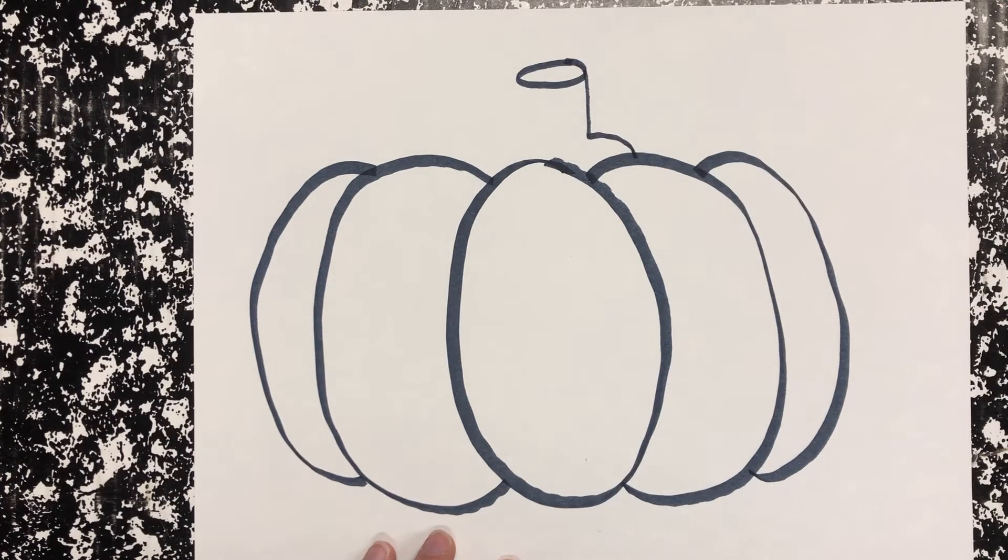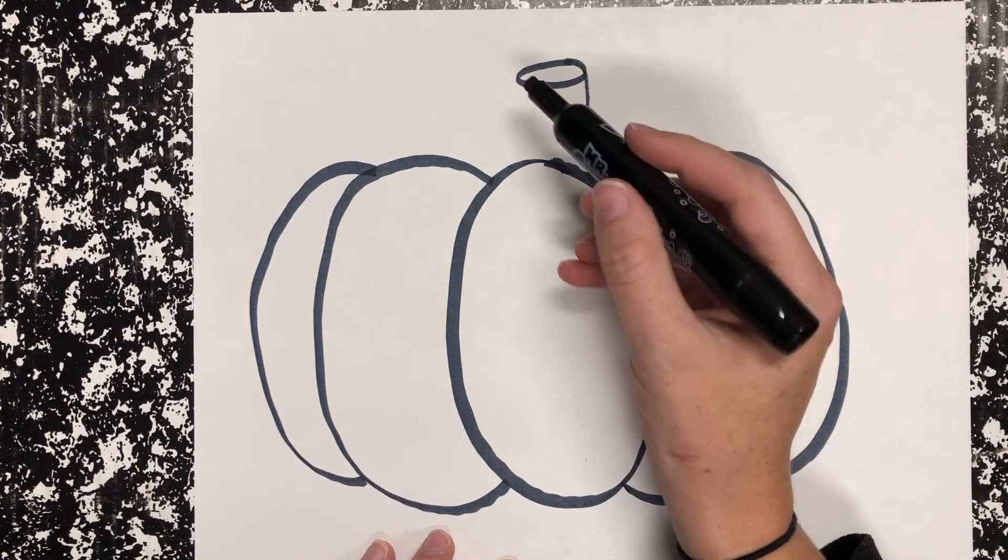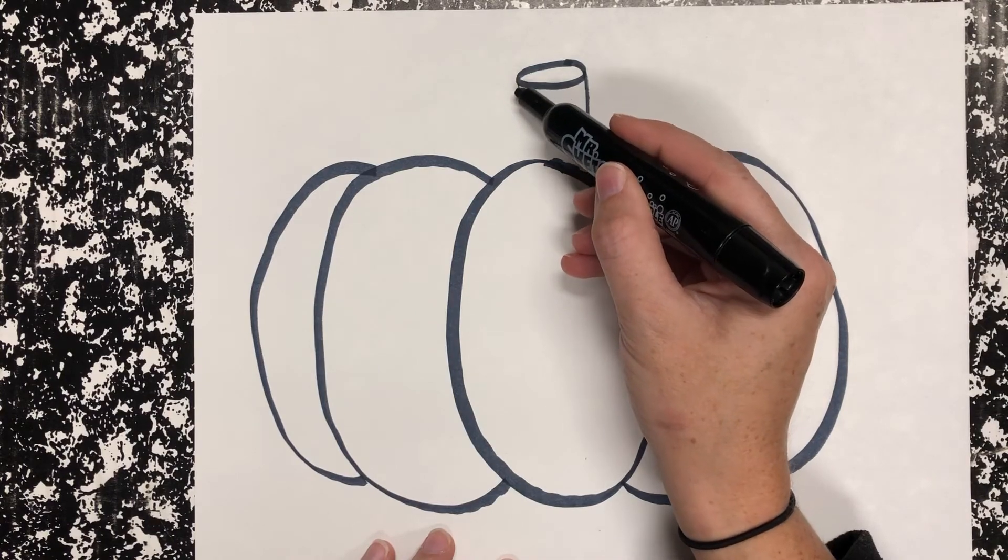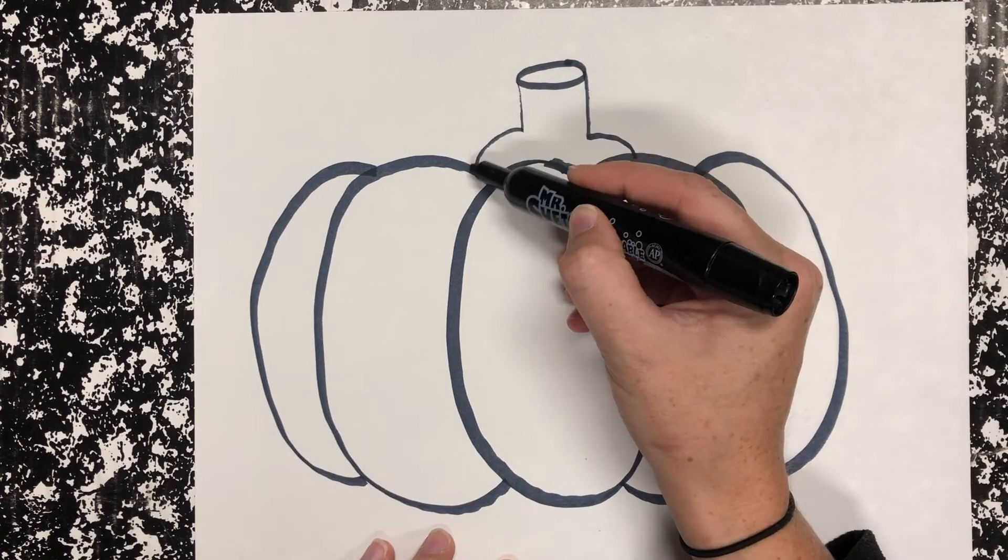Do the next side the same way, just going in a different direction. So you're going to find the edge of the oval, come down and bump out.